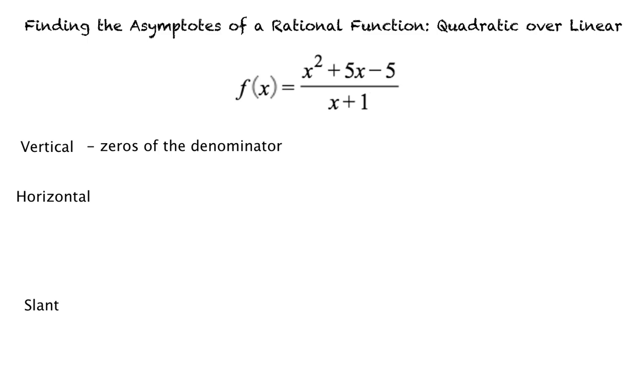Next, we will set the denominator equal to 0 and solve for x. This tells us that there is one vertical asymptote at x equals negative 1.